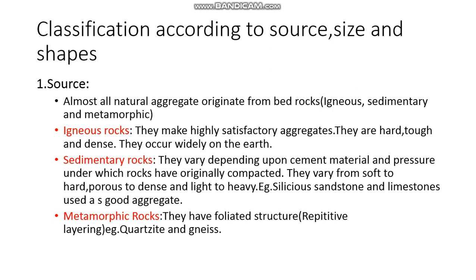Almost all natural aggregates originate from bed rocks — that is either igneous rocks, sedimentary rocks, or metamorphic rocks. You may have studied these in geography or first year. All aggregates come from a big parent rock — a very large, main rock.